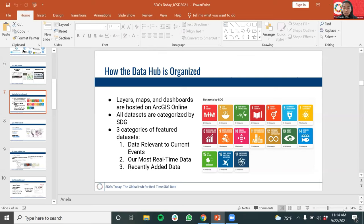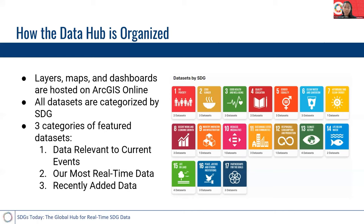I'll start to share my screen. I'll go through a little bit on how the Data Hub is organized, the types of datasets that we feature on our website, our process for adding data to the website, and the data criteria that we are looking for. I'll also give a demo on some of the dashboards. All of the layers, maps, and dashboards are hosted on ArcGIS Online. They are categorized by SDG, so you can see how many datasets we have for each SDG and click on whichever SDG you're interested in. We also have three categories of featured datasets.